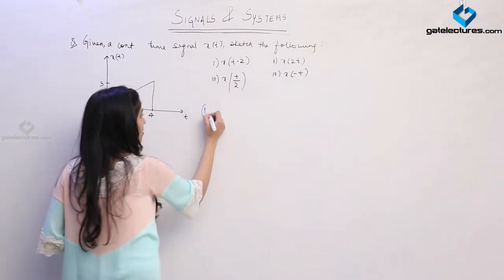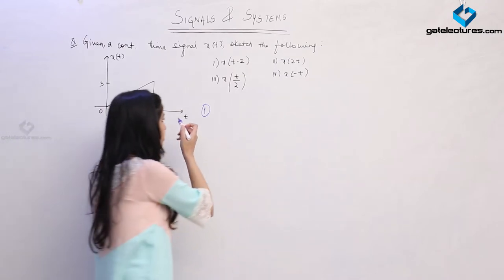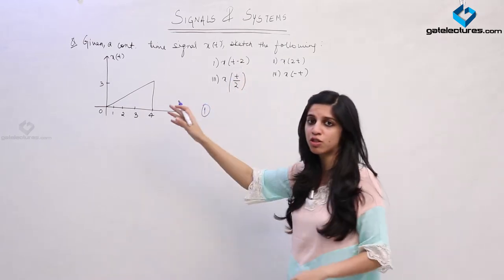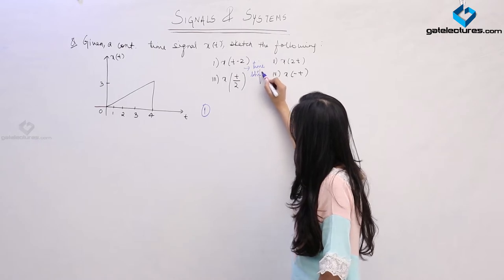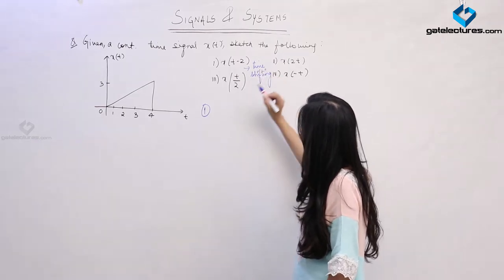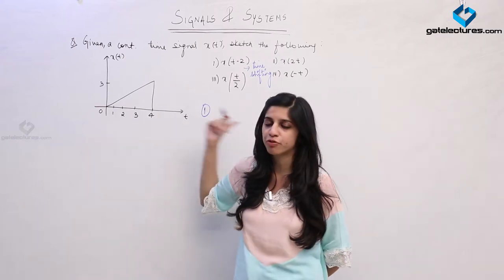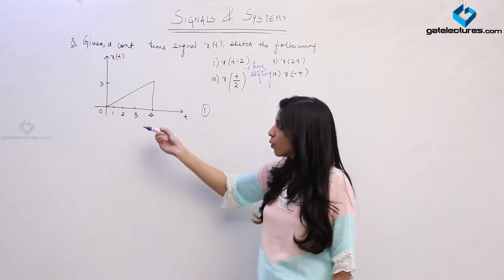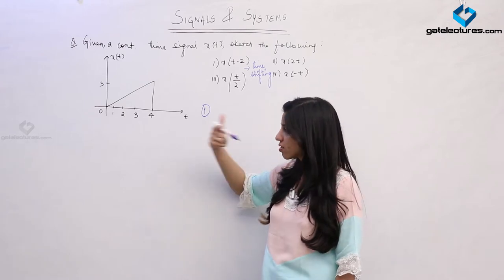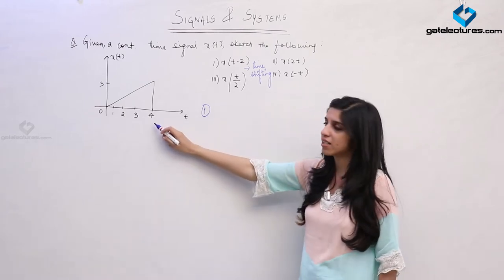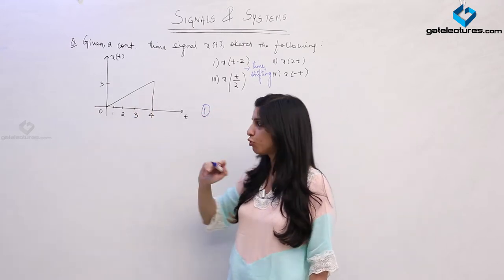Look at the first option: X(t-2). This is a time shifting operation. What happens is this signal is going to be shifted towards the right by 2 units. Every instance on this time axis is going to be shifted right by 2 units. Whatever value of the signal was occurring at t=0 previously is now going to occur at t=2. Consequently, the value occurring at t=4 is now going to occur at t=6. The whole signal is going to be shifted towards the right by 2 units.